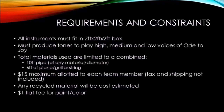Aaron Siegel here. I will be talking about requirements and constraints for the Band in a Box project. All instruments must fit in a two-foot by two-foot by two-foot box. They must produce tones to play high, medium, and low voices of O2Joy. Total materials are limited to a combined 10 feet of pipe and 6 feet of string for piano or guitar. A $15 maximum budget is allowed to each team member. Tax and shipping is not included, and any recycled material must be cost estimated. There is also a $1 flat fee for paint and color.